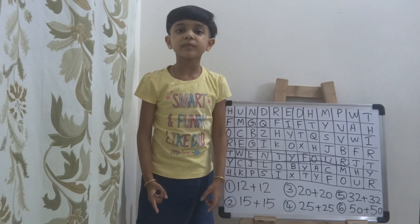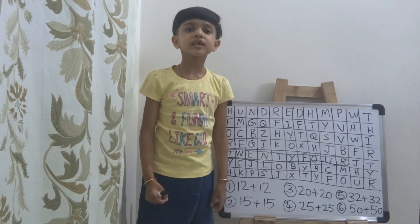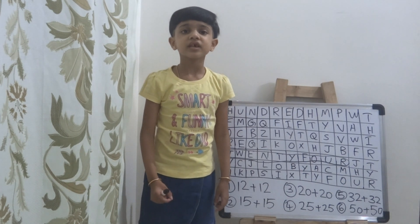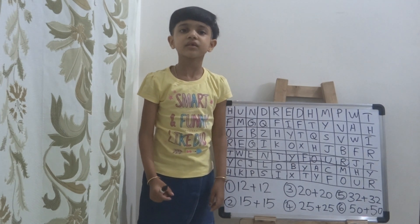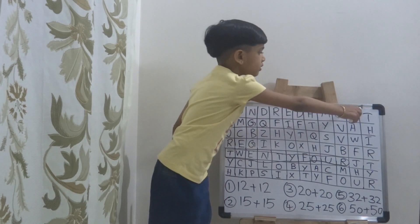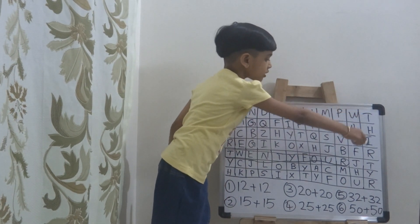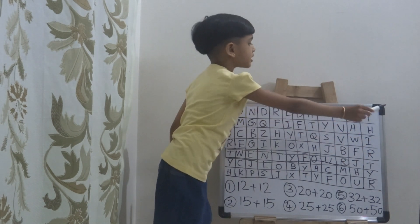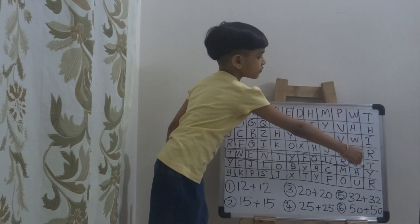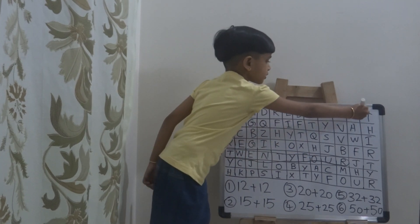Do you know what is the spelling of 30? I will say T-H-I-R-T-Y, 30. Let's find out. Look, here it is: T-H-I-R-T-Y, 30. So you can circle it.